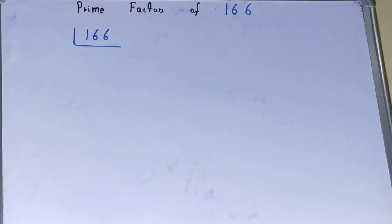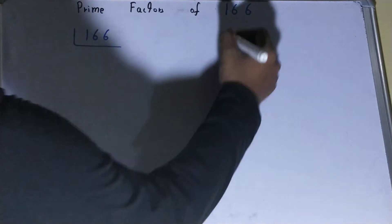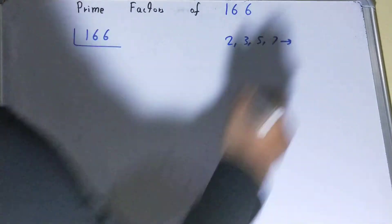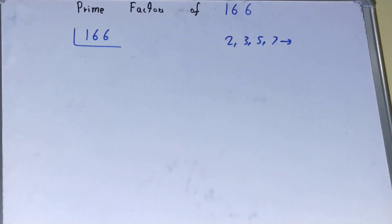Before solving this, you must know what prime numbers are. Prime numbers are numbers divisible by themselves and one only, like 2, 3, 5, 7, and so on.